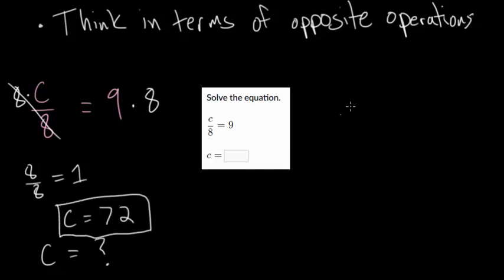Now, once you get an answer, remember, you have to check it. You have to plug it back in to see if it makes sense. So we're going to plug in c right there. And so you get 72 divided by 8. And the question is, does this equal 9? And 72 divided by 8 does equal 9, which means we can feel very confident that c is, in fact, 72.